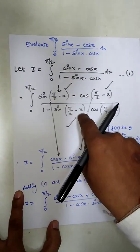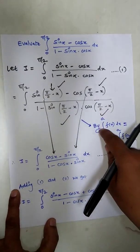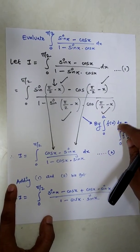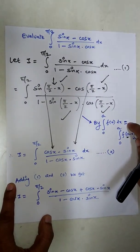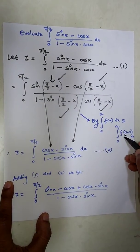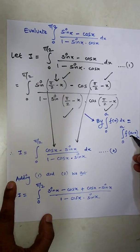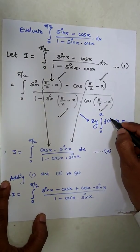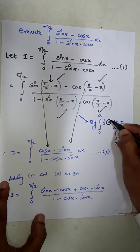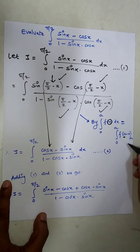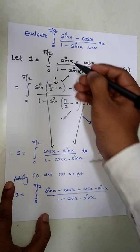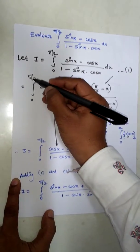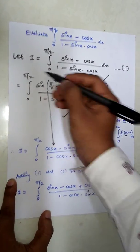Before we proceed, we use the formula: the integral from 0 to a of f(x) dx equals the integral from 0 to a of f(a − x) dx. So wherever x appears, it gets replaced by a − x. Here a = π/2, so x is replaced by π/2 − x.